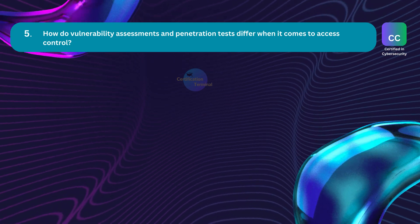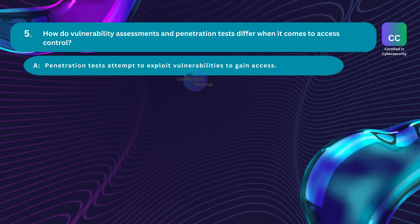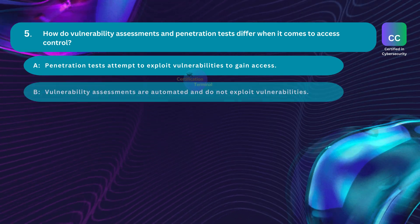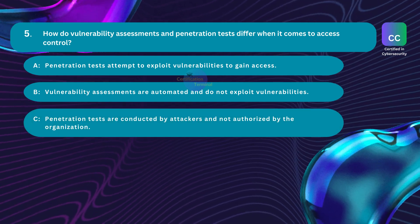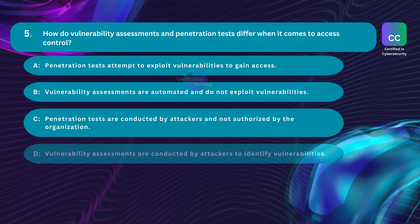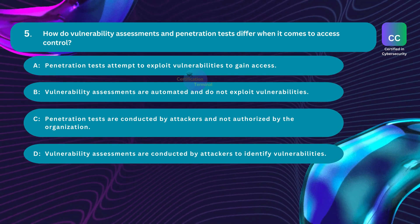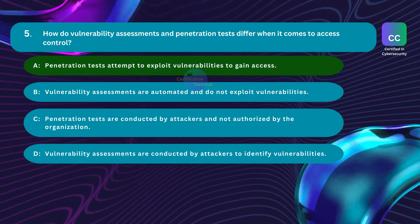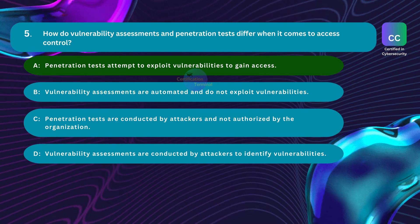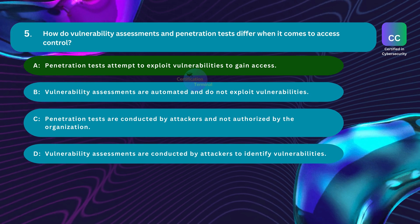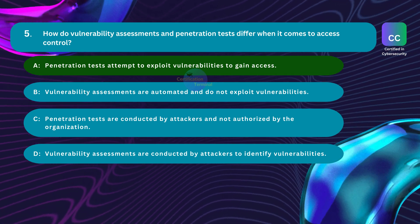Question number five: How do vulnerability assessments and penetration tests differ when it comes to access control? Option A: penetration tests attempt to exploit vulnerabilities to gain access. Option B: vulnerability assessments are automated and do not exploit vulnerabilities. Option C: penetration tests are conducted by attackers not authorized by the organization. Option D: vulnerability assessments are conducted by attackers to identify vulnerabilities. The correct answer is Option A. Penetration tests simulate real-world attacks by attempting to exploit identified vulnerabilities to gain unauthorized access, while vulnerability assessments concentrate on identifying weaknesses and security flaws.